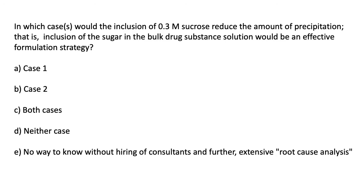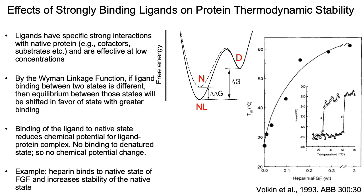For these two cases, in which would the inclusion of 0.3 molar sucrose reduce the amount of precipitation? That is, in which case would the addition of this sugar be an effective formulation strategy? We will go back over this later after we go through some of the mechanisms that are most relevant. Please note answer E, which has seemed to be very common in the industry: we don't really know the answer until we hire a bunch of consultants and do further extensive root cause analysis. However, I hope to convince you that by knowing mechanisms, you can say right away in which case sucrose would be a good formulation strategy.